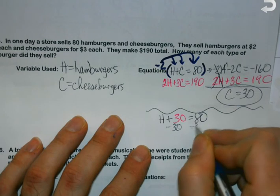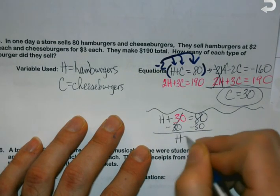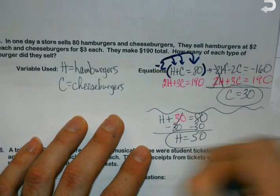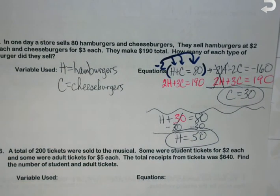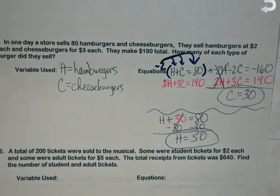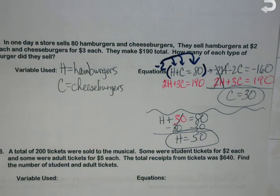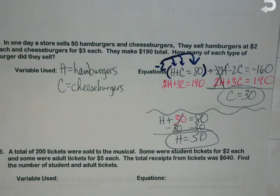If I just add it down this time, it doesn't quite work as well. This is 2H, so I want this to be negative 2. I just multiplied negative 2 times everything in that first equation. I leave the second one alone. Negative 2 and positive 2 cancel. Negative 2 plus 3 is 1C. I'm not even going to have a second step. Negative 160 plus 190 means I have 30 cheeseburgers. Hamburgers plus cheeseburgers, but I know cheeseburgers, that's 30. H plus 30 equals 80, so H equals 50.